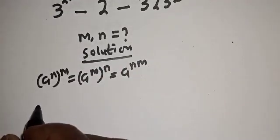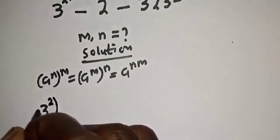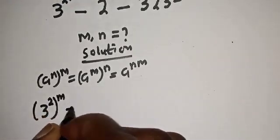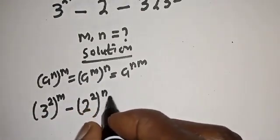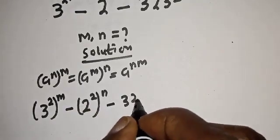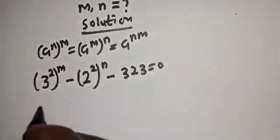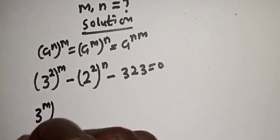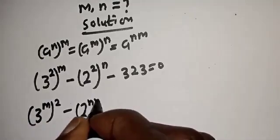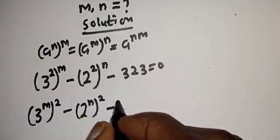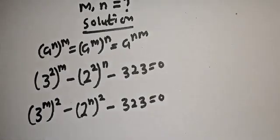Then, 3 raised to power 2m can be written as 3 raised to power 2, raised to the power of m. And 2 raised to power 2n can be written as 2 raised to power 2, raised to the power of n. From this rule, this becomes 3 raised to power m squared minus 2 raised to power n squared minus 323, equal to 0.